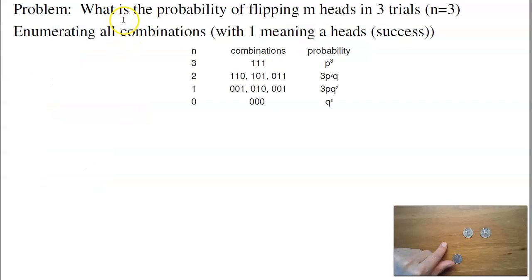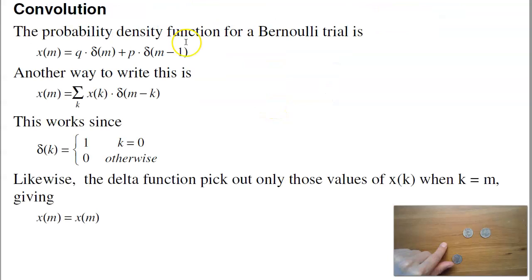If I want to put three coins, there are eight permutations. One of them has three heads, three different ways of getting two heads, three different ways of getting one heads, one way to get three tails. If I want to do more, then it gets kind of complicated.